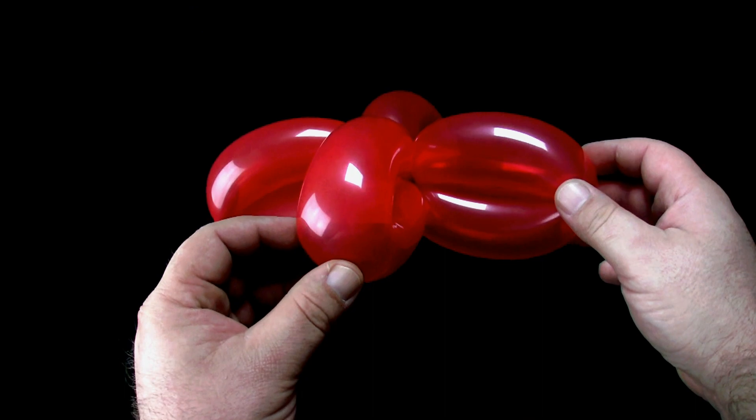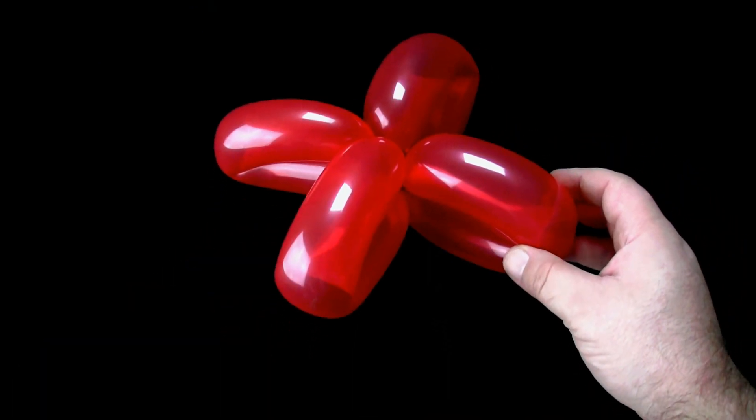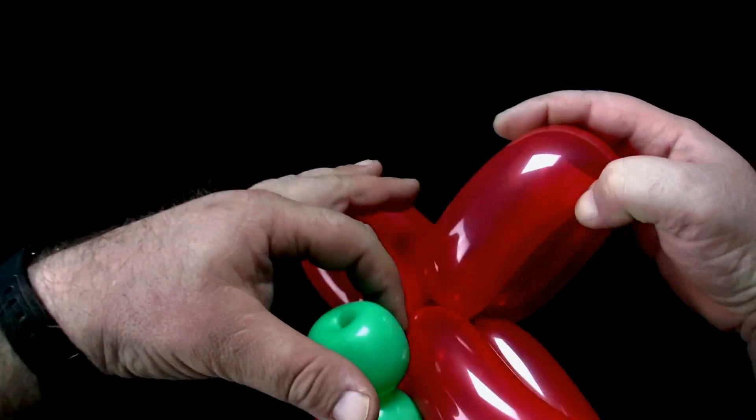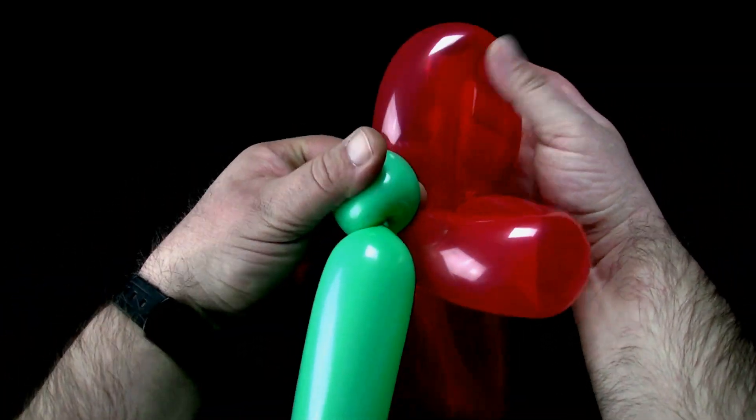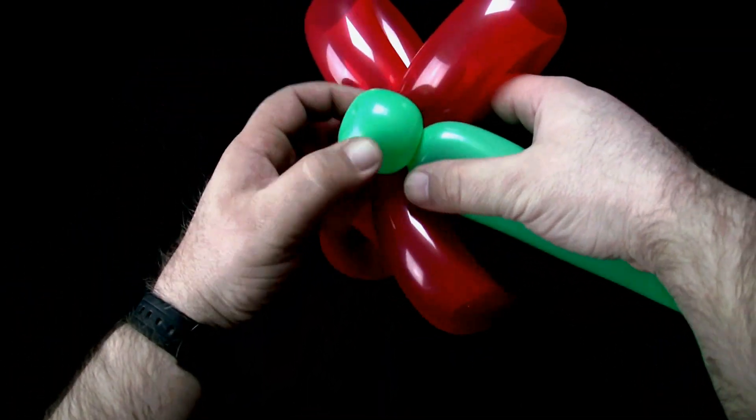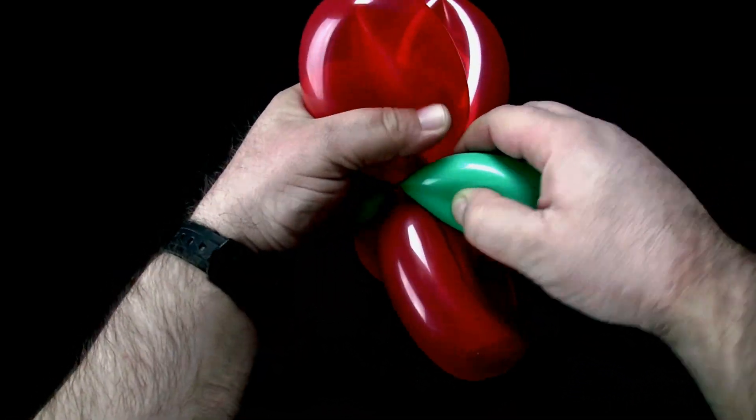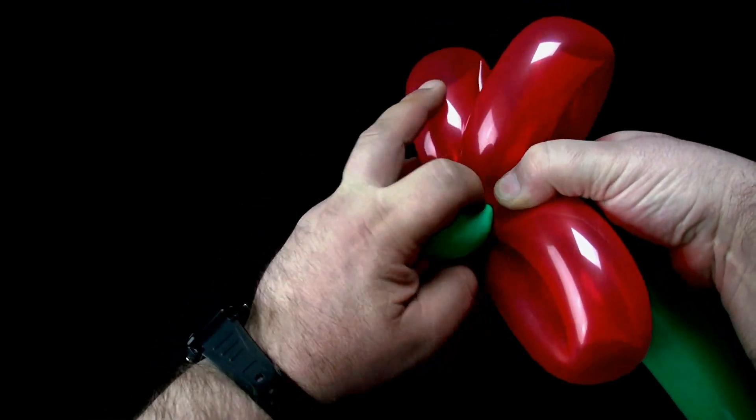It is now time to join the two balloons together. Put the tulip twist in the center of the petals on one side and holding the tulip twist in place, stretch the balloon along the center of the petals until the balloon continues from the center of the other side.